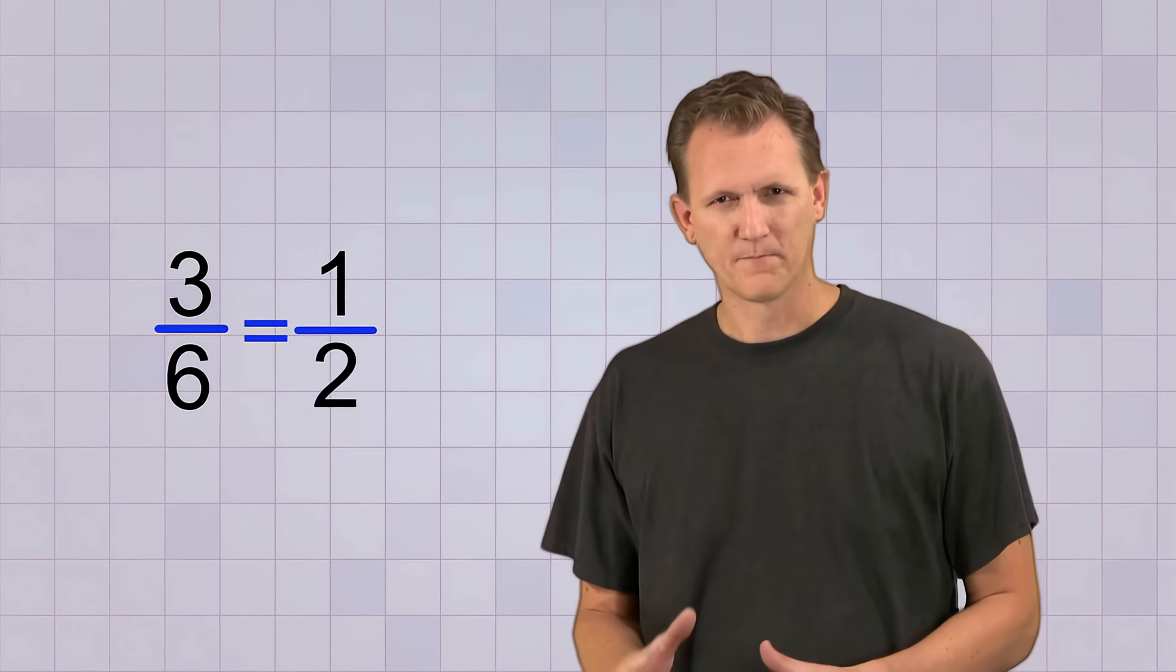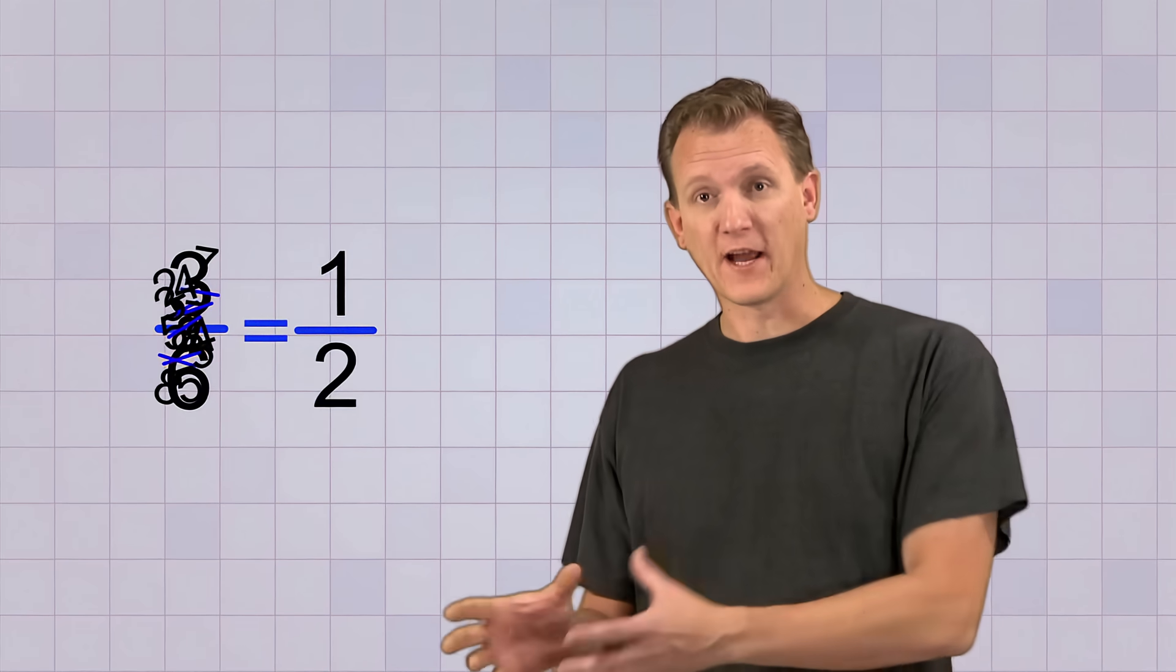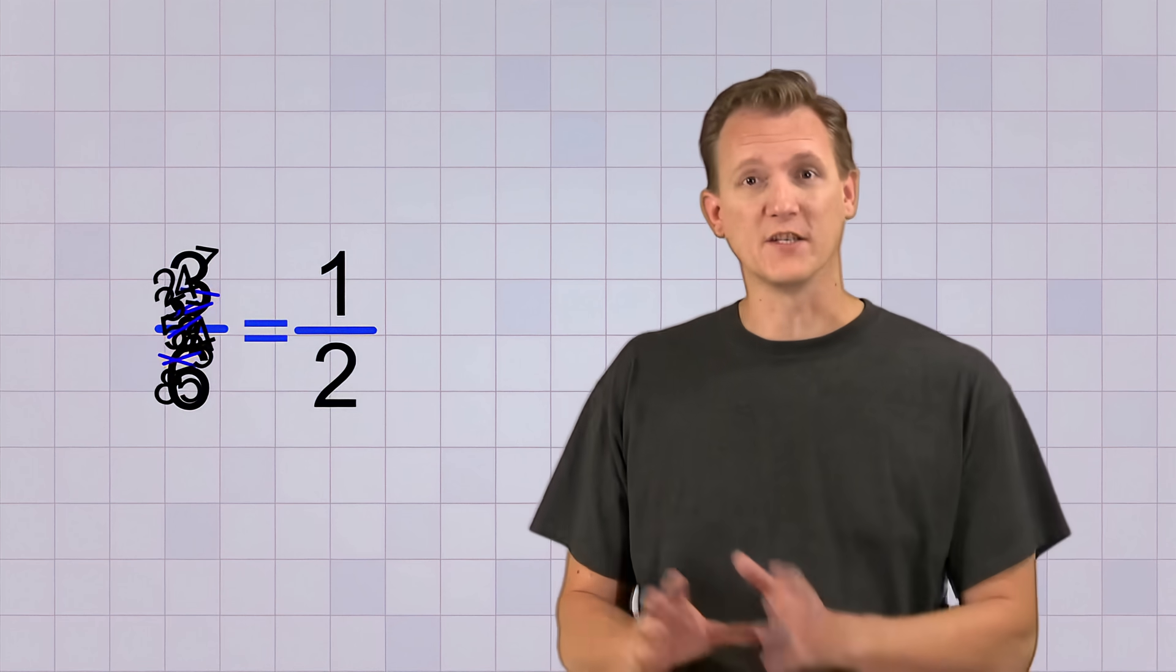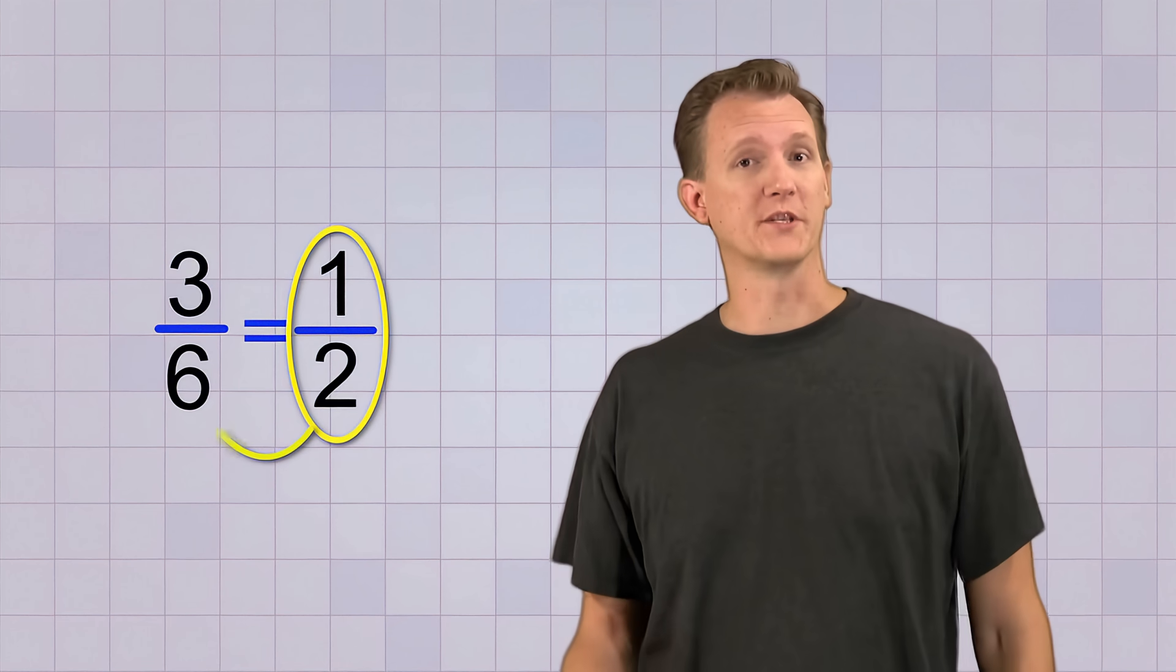Another way of thinking about it is that we're trying to find any whole fractions that are hiding in the fraction we're trying to simplify. And if we find any, we can just get rid of them and the fraction we're left with is simpler than the one we started with.